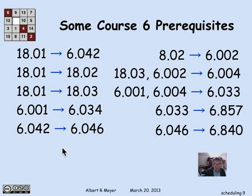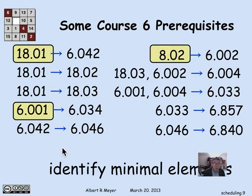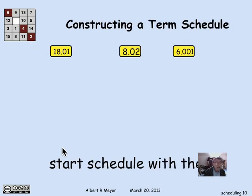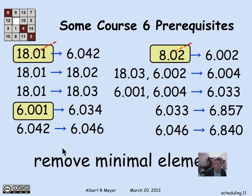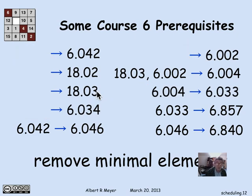Let's look at the prerequisites again and discuss how to do scheduling. The first step is to identify the minimal elements — there are three of them. We're going to start by taking those three in the first term, using a greedy strategy: take as many things as we possibly can each term given the constraints. We can take all the freshman subjects in the first term since they have no prerequisites. Then we get rid of them — remove all occurrences of 18.01, 8.02, and 6.001 — and get a simplified diagram with those minimal elements removed.